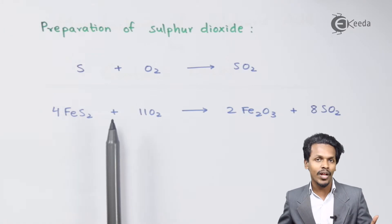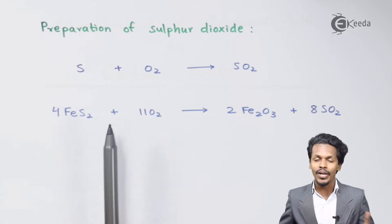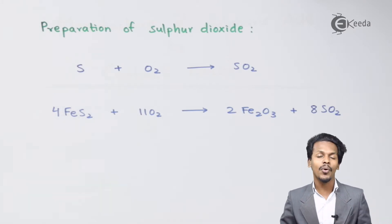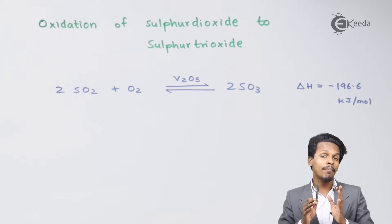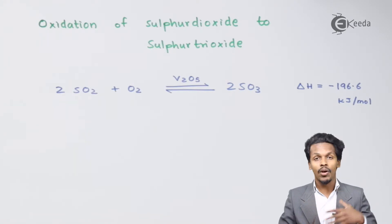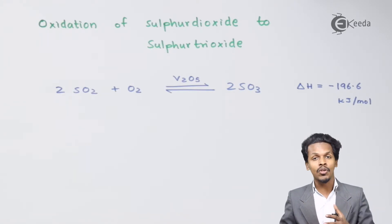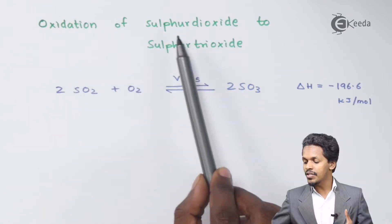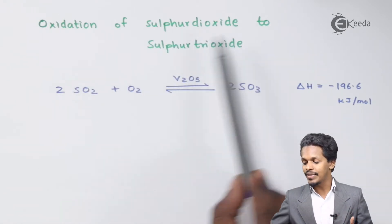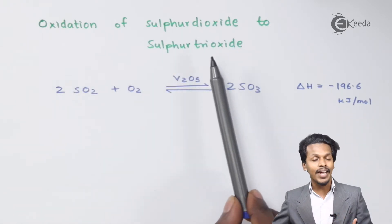Now let me talk about the second step, which is the most important step in the formation of H₂SO₄ — that is the oxidation of Sulfur Dioxide to Sulfur Trioxide.